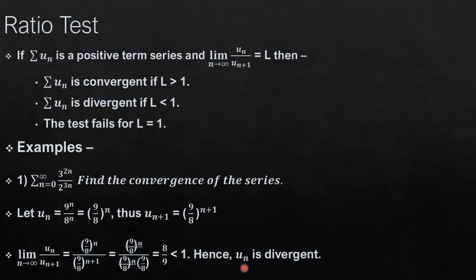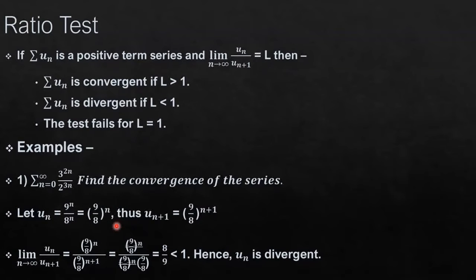According to the ratio test the series will be divergent. If you carefully look at u_n it is something to the power n — like geometric series where u_n equals a times r to the power n. Here a is 1 and r is 9/8. Since 9/8 is greater than 1, and we know that if r is greater than or equal to 1 the series is divergent, we can say the ratio test is derived from the geometric series test.